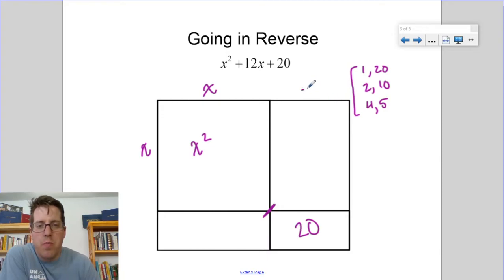So if I try plus 1 plus 20, that would be 20x and 1x, and that doesn't add to 12, that adds to 21. So that's not the right pair.